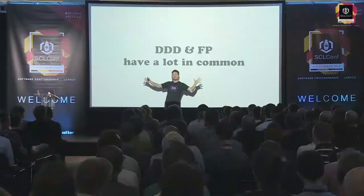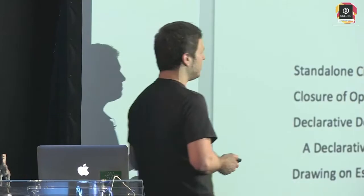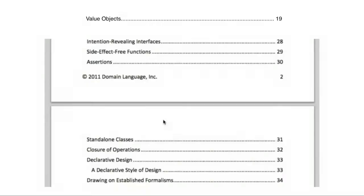All this is very abstract, so we need examples. One example is that domain design and functional programming, taking two different things, have a lot in common. To be honest, I first learnt about functional programming ideas by learning domain design. So what do they have in common? Let's look at the table of contents of the blue book — the blue bible of domain design from Eric Evans — and we see: value objects, side-effect free functions, closure of operations, declarative design, drawing on established formalisms.